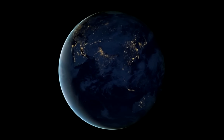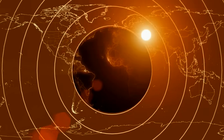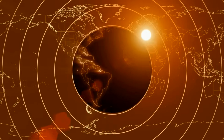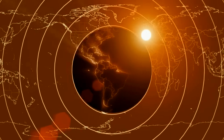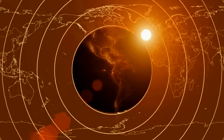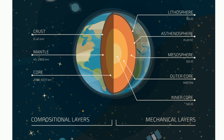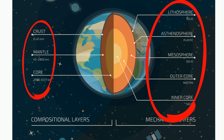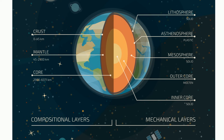Welcome to MooMooMath and Science. In this video, let's take a look at the layers of the Earth based on chemical composition and physical properties. The Earth can be divided into three layers based on chemical composition: the crust, the mantle, and the core.